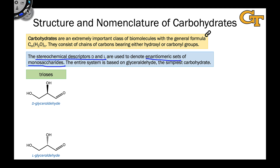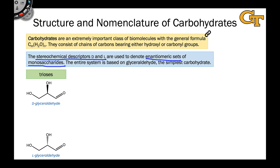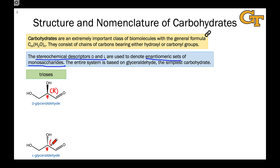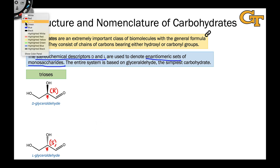Glyceraldehyde is a triose with three carbons. By convention, D-glyceraldehyde has the R configuration at carbon 2, its only stereocenter. In the enantiomeric L-glyceraldehyde, the corresponding stereocenter has the opposite configuration — S rather than R.